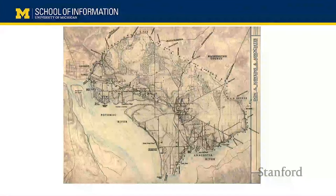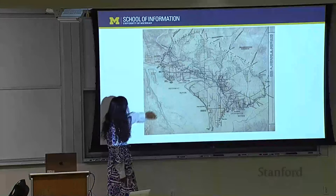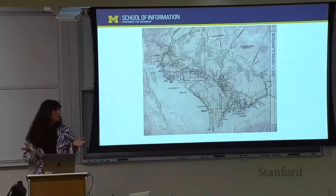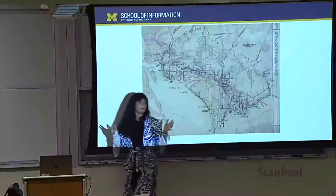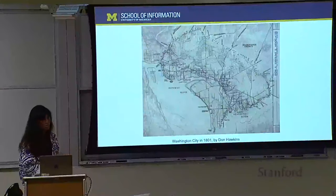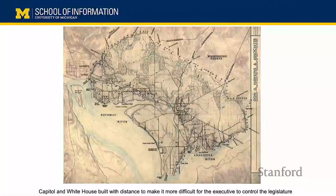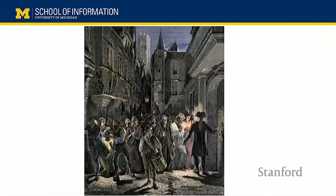It doesn't have to always be this insidious. Here we're looking at Washington DC — the White House and the Capitol — and they're quite far away, one mile apart. Back in the day, that was no small distance. This is another example of intentional environmental construction: the Capitol and White House were built far from each other to limit executive control over the legislature. We also have unintentional examples, like the narrow Paris streets that allowed blockades during the revolution — again, environments shaping behaviors.